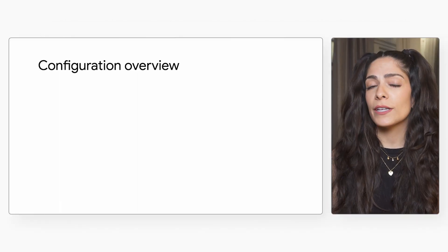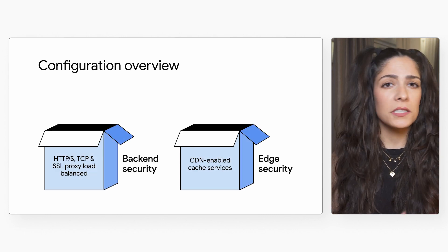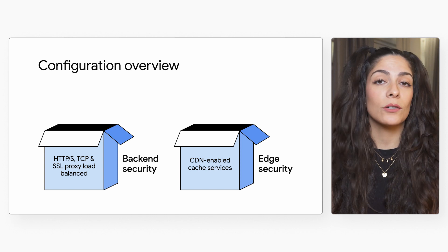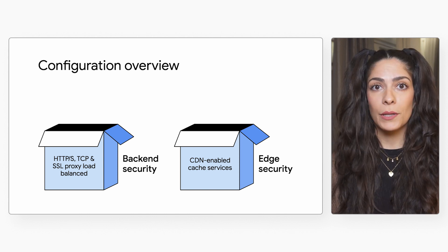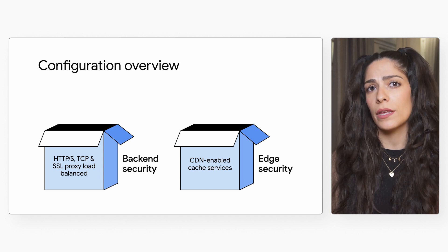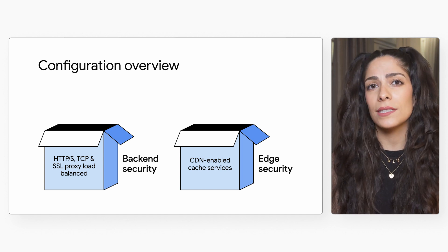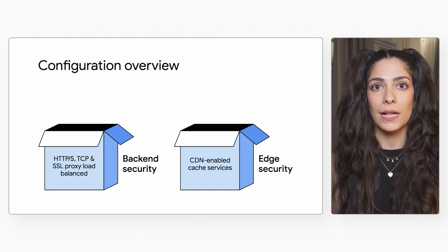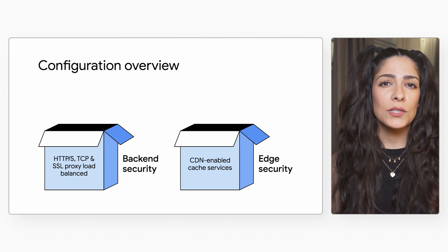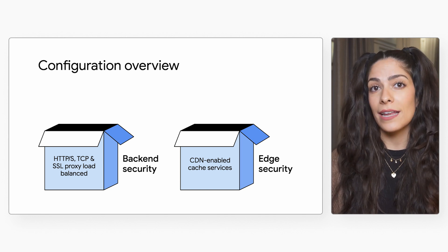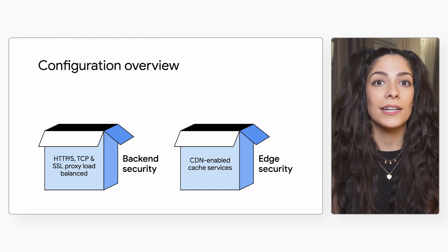Cloud Armor is configured as security policies. There are a couple different types of security policies depending on which resources you're looking to protect: back-end security policy, which is associated with an HTTPS load balanced or TCP/SSL proxy load balanced back-end service, and edge security policy, associated with cloud CDN-enabled back-end buckets or with media CDN-enabled edge cache service.